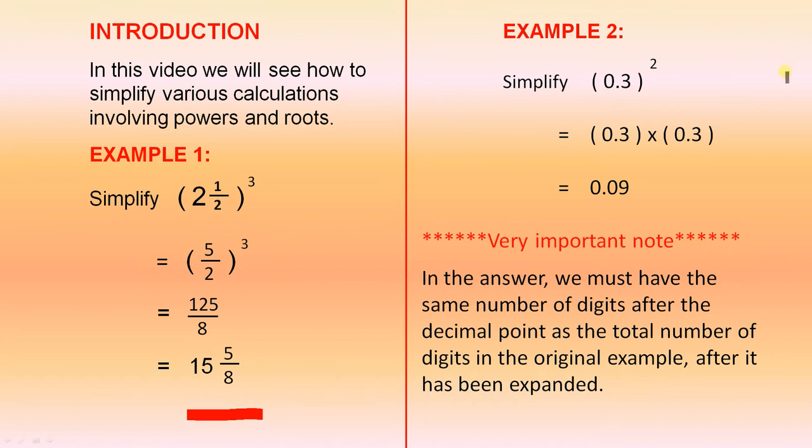Example 2: Simplify 0.3 all squared. Now when you square something, you just multiply it by itself. 3 times 3 is 9. There is the 9. So the answer is 0.09. Now you might say, how did I get this answer? How did I know where to put the decimal point?